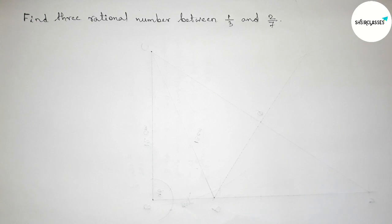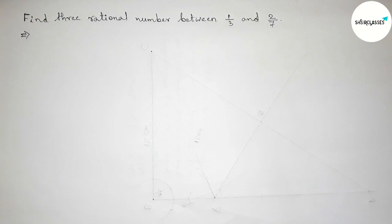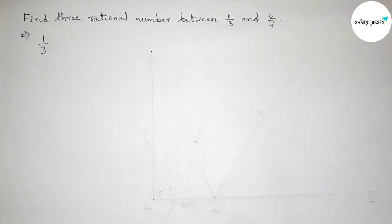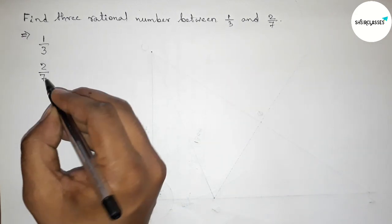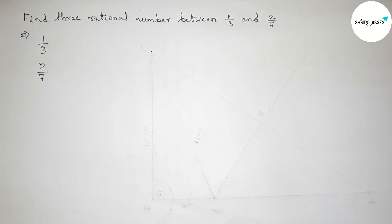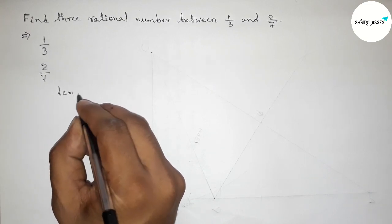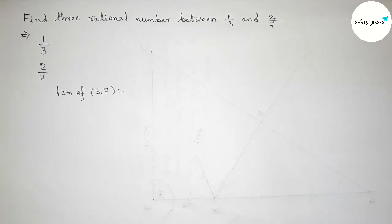First of all, let us solve this problem. The first rational number given is 1 by 3 and the second one is 2 by 7. Both the denominators are not the same, so we have to make the same denominator first. We will start by finding the LCM of 3 and 7.